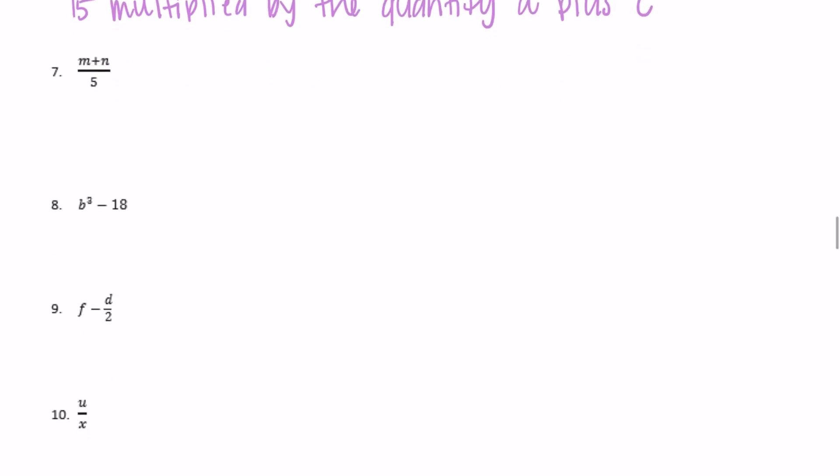Okay, so we have m plus n over 5, or m plus n divided by 5. Let's say the sum, just to use a different word, of m and n divided by 5.